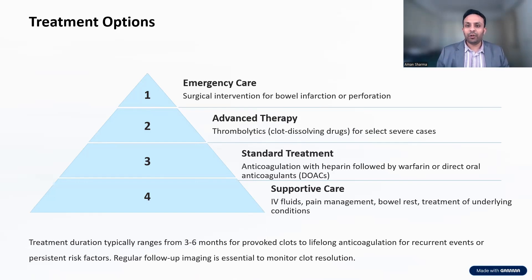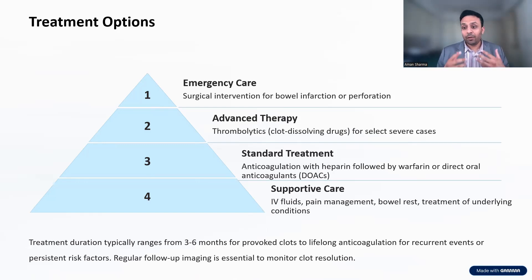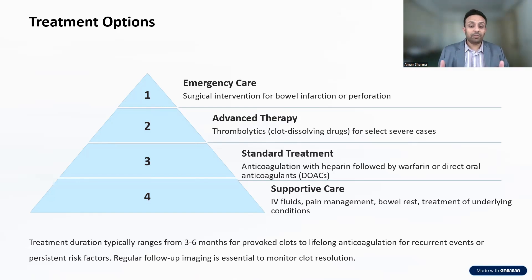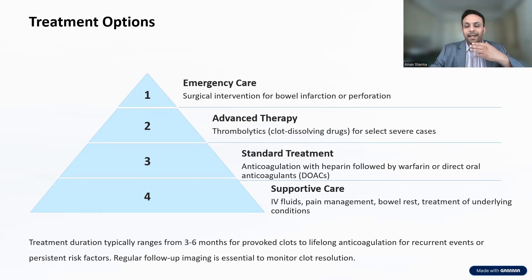You also need treatment of your underlying conditions, which have essentially precipitated all of these problems. In general, if the clots have been provoked — they have a precipitating reason, whether it is hormonal therapy or contraceptive pills in younger women — that can also be precipitating. If you've got a reason, it's provoked. If you don't have a reason, it's unprovoked. And the time span of you being on blood-thinning medications would depend on that.